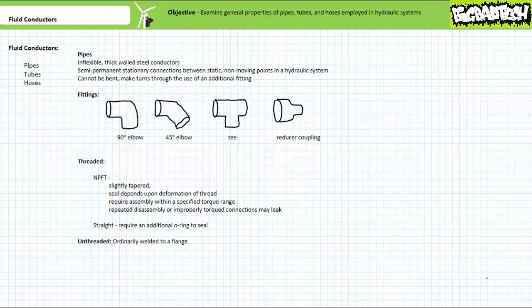Repeated disassembly and reassembly, or over or under torquing a connection making use of NPFT threads, may over-deform the threads, leading to progressively increased leakage.